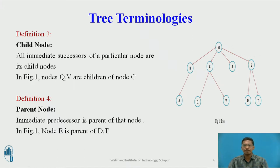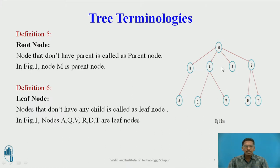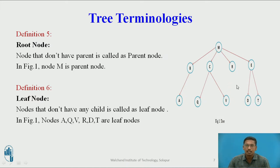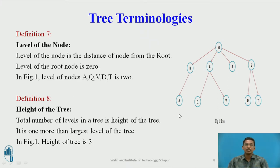Predecessors means the previous node. Node M is the parent node of nodes B, C, R, and E. Next, root node: the starting node — the node that does not have any parent — is called the root node. In the figure, M is the root node. Next, leaf node: nodes that don't have any child nodes are called leaf nodes. In the figure, A, Q, V, R, D, and T are leaf nodes.